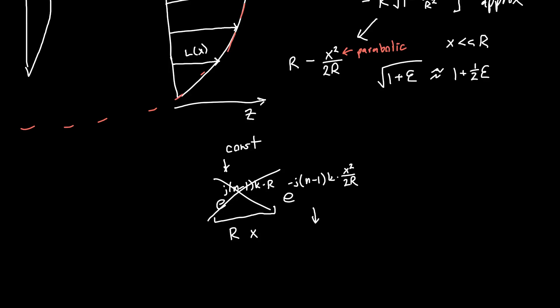The part that we're most interested in is this guy, this phase term, which is a function of x. Now notice something kind of interesting. Do you recognize this n minus one over r? If you've taken a class in geometric optics, you might notice that for a plano convex lens, one over f is just n minus one divided by the radius of curvature r. So we can replace this with the focal length to get e to the minus j kx squared over two times the focal length.